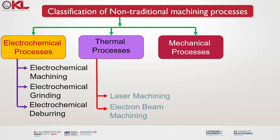The next classification of thermal processes is laser machining, also known as laser material processing or laser cutting. It is a non-contact machining process that utilizes a high intensity laser beam to remove or alter material from a workpiece. It is a versatile and precise method widely used in various industries including manufacturing, electronics, automotive, aerospace and medical device production. The next classification of thermal processes is electrical discharge machining.